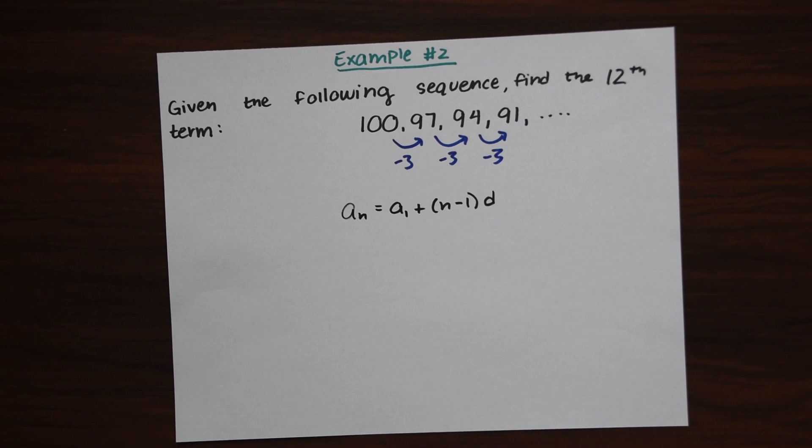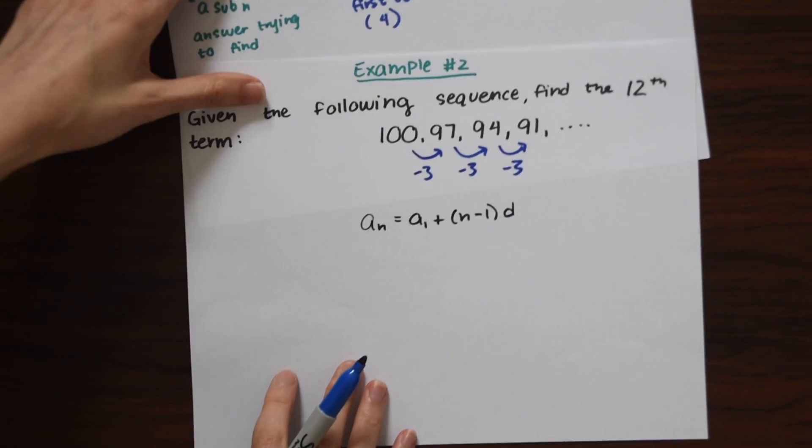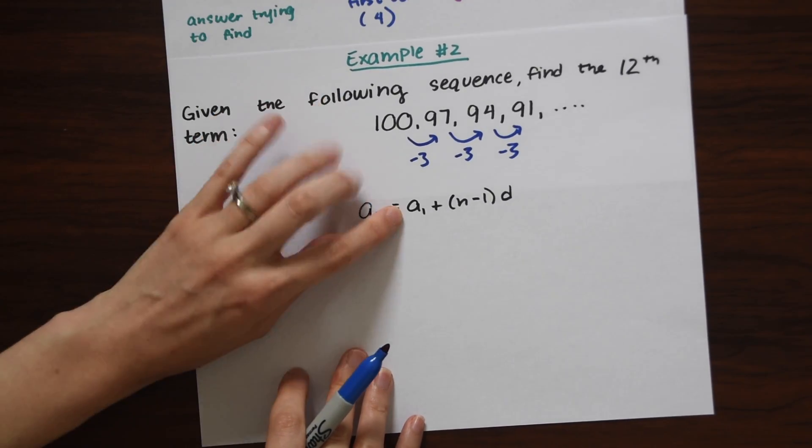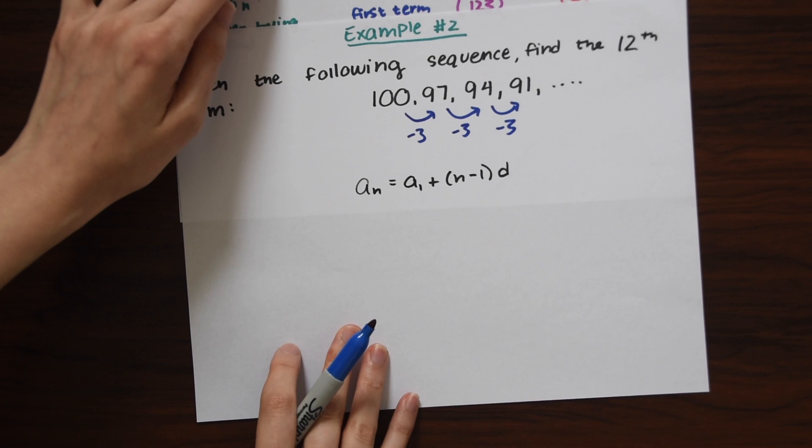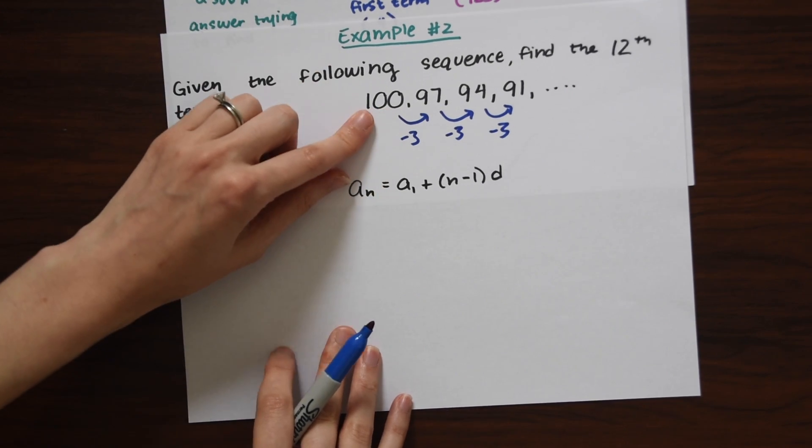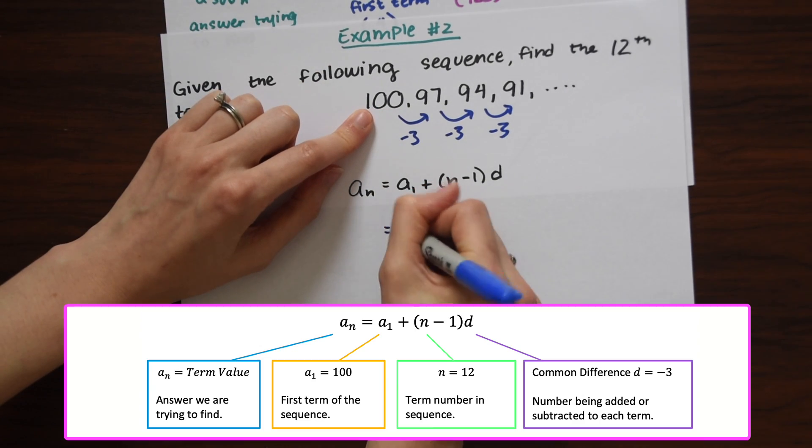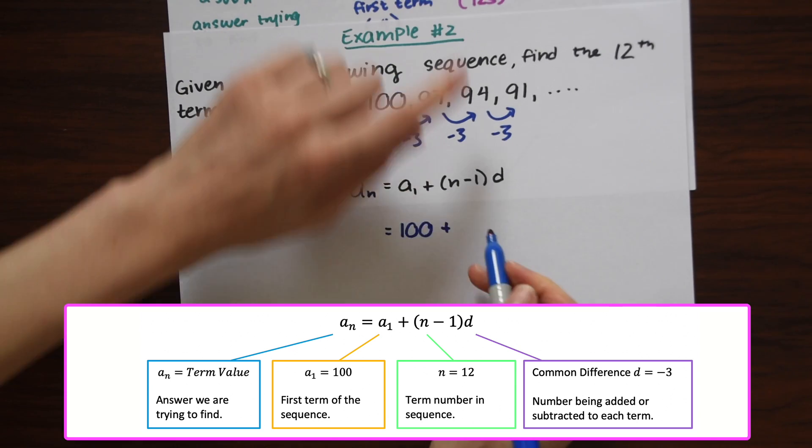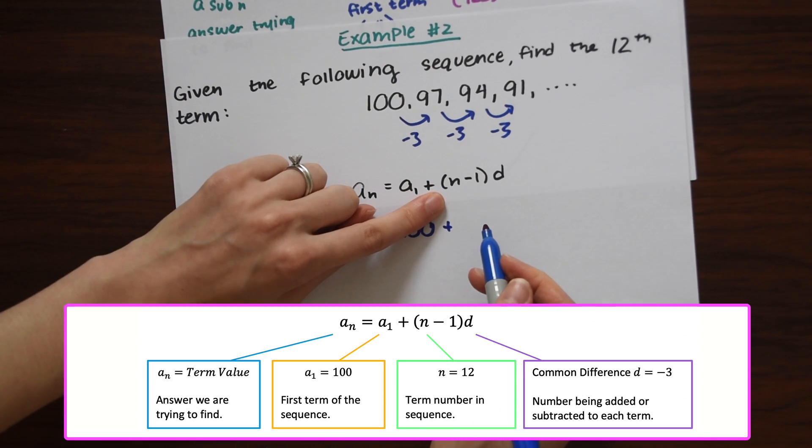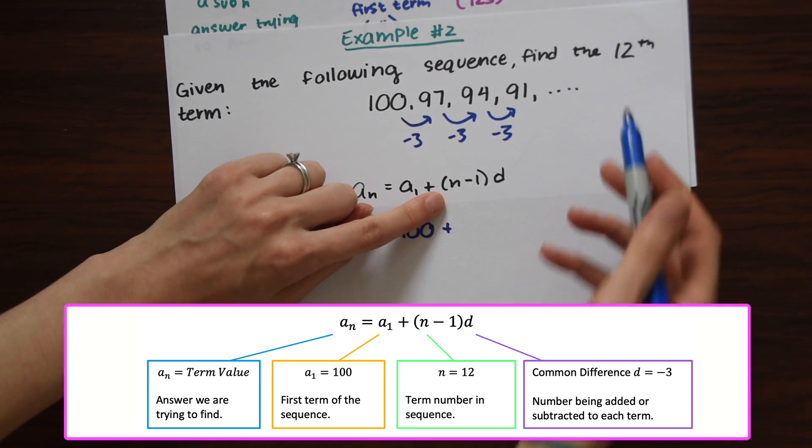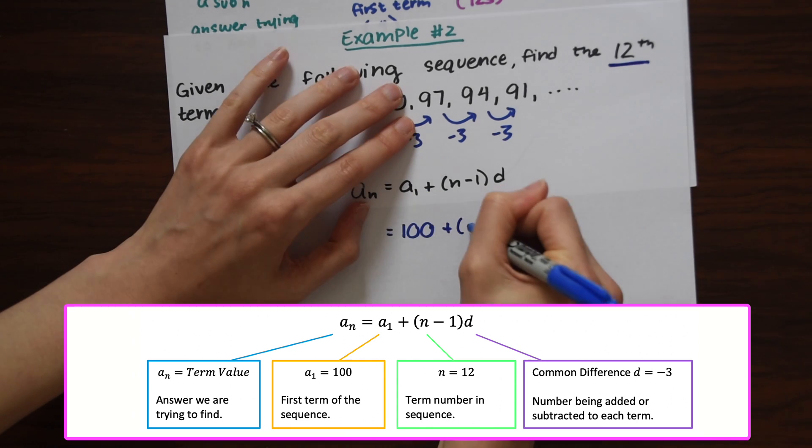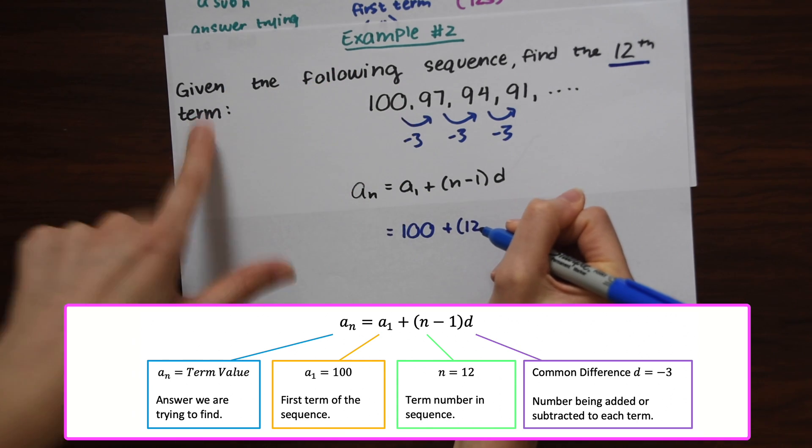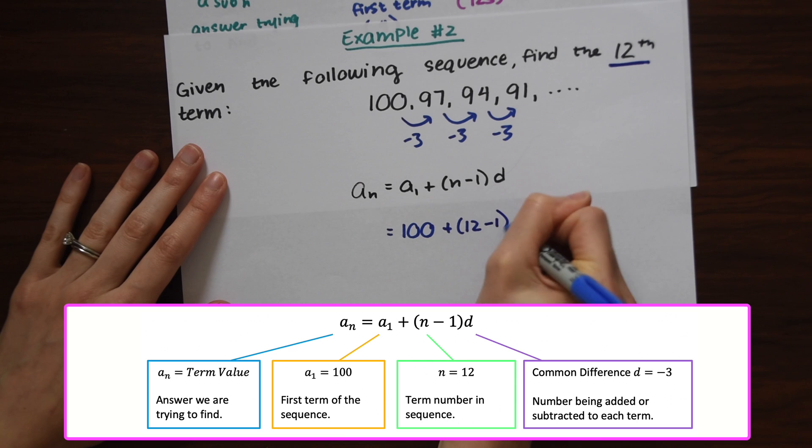So let's just get out the formula what each thing represents. So A sub 1 is just that first term. So in this case, our first term is now 100 plus N minus 1. So remember N is the term number we're trying to find. So the term number we want to find is 12, because we want to find the 12th term. So it's 12 minus 1.